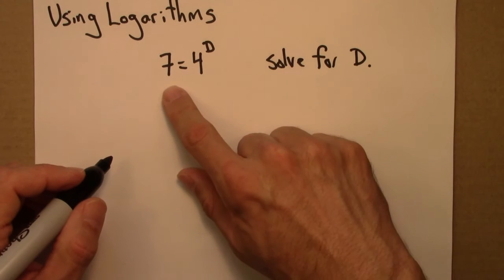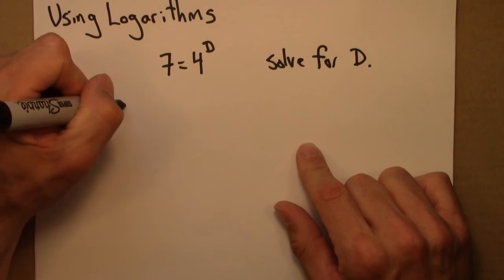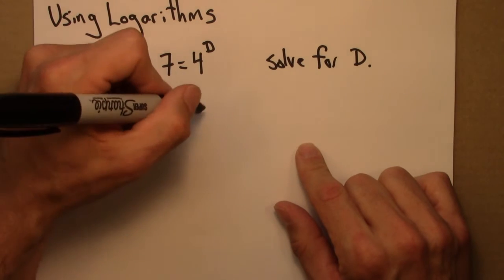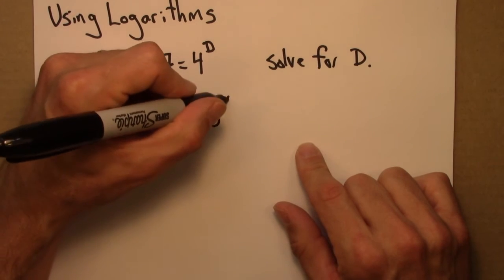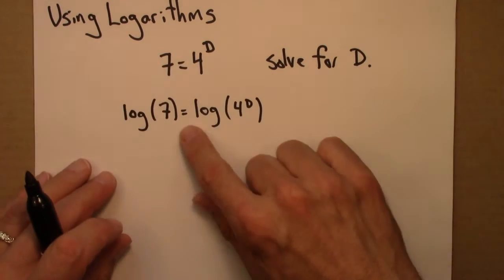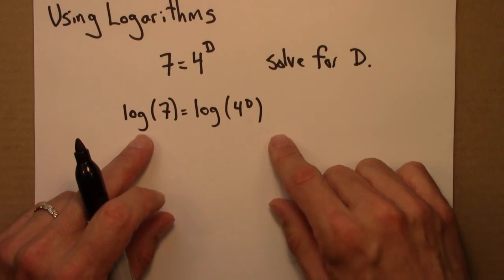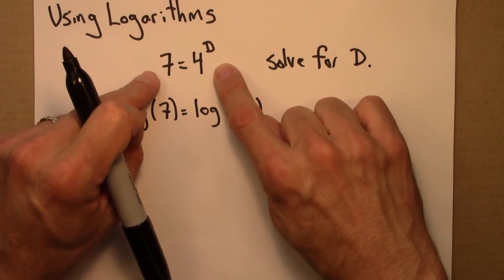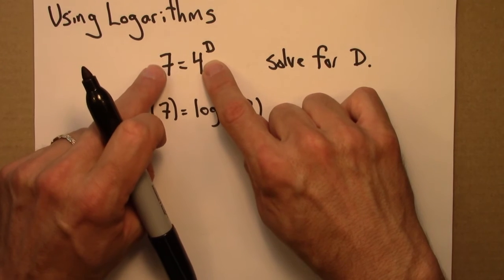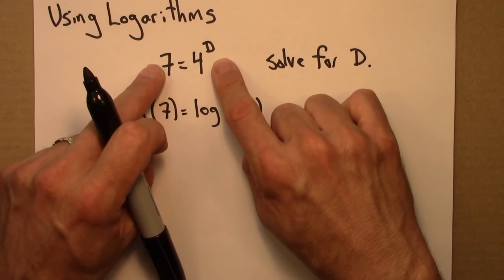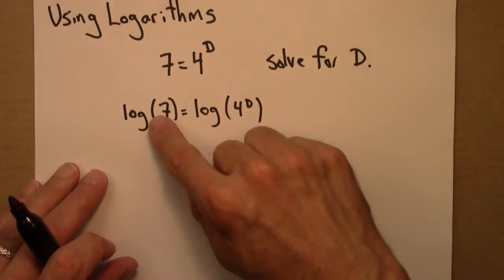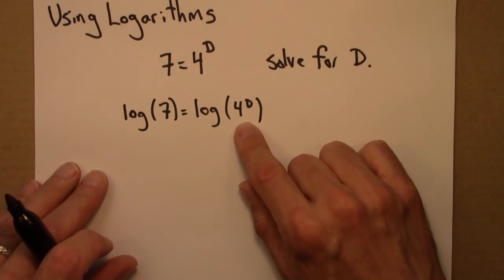To do so, we'll begin by taking the log of both sides. When we're solving an equation, we can do whatever we want as long as we do the same thing to both sides, because we have to keep this equals sign in place. So if I do something to this side, I have to do the same thing here. The only exception is we're not allowed to divide by 0, but that's not a concern here. So we take the logarithm of both sides.